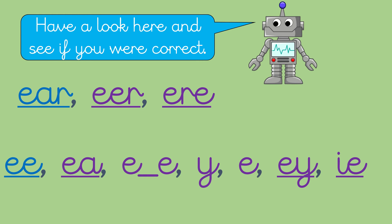So, 'ear' — if you have a look here. E-A-R. And then there's another one, double E-R. And the last one is E-R-E. We've been looking at these all week as our recap. And then 'ee' is double E, E-A.